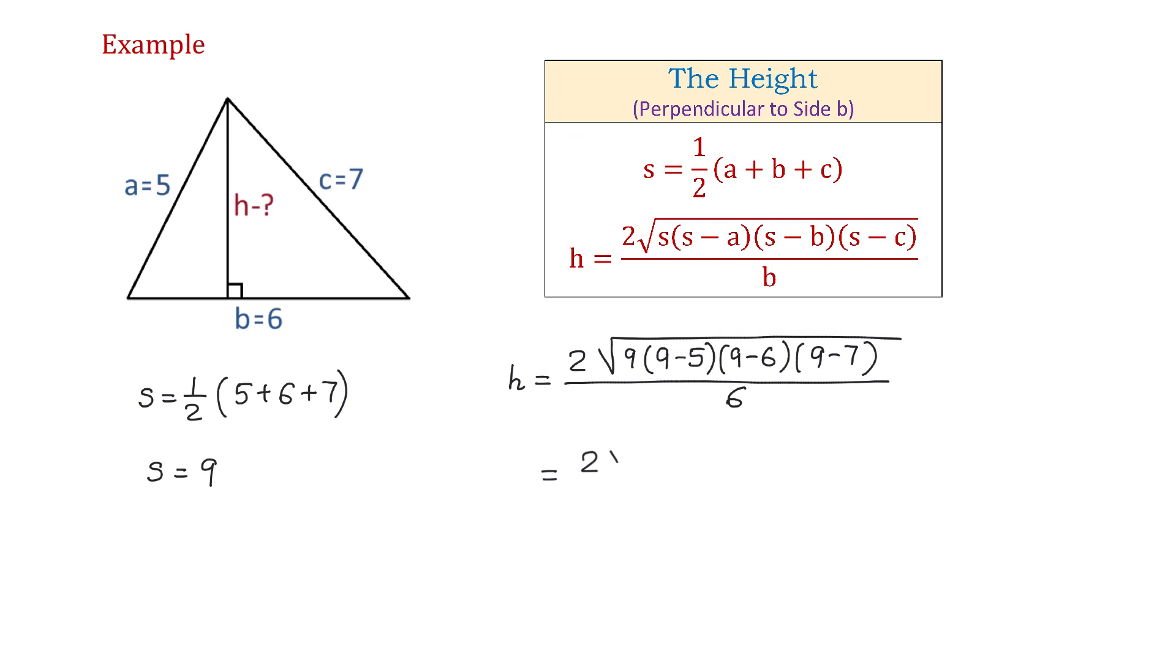Then, this will be equal to 2 times square root of 9 times 4 times 3 times 2, all over 6. Then, 9 times 4 times 3 times 2 is 216.